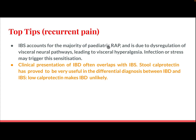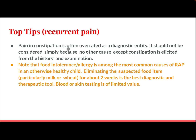Irritable bowel syndrome accounts for the majority of pediatric recurrent abdominal pain and is due to dysregulation of the visceral neural pathway leading to visceral hyperalgesia. Infection or stress may trigger this sensation. Clinical presentation of inflammatory bowel disease often overlaps with irritable bowel syndrome. Stool calprotectin has proved very useful in differentiating between inflammatory bowel disease and irritable bowel syndrome. Low calprotectin makes inflammatory bowel disease unlikely.